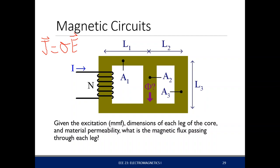If there's a current flowing through this coil — through this loop of wires that has N turns — and if we perform Ampere's law, an approximate path would be something like this: a square path. We know that each loop of current generates a magnetic field. There's no magnetic field outside — let's assume that for now. It turns out it's not entirely true, but it's a reasonable assumption.